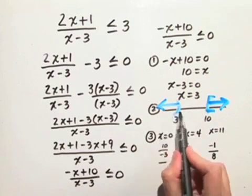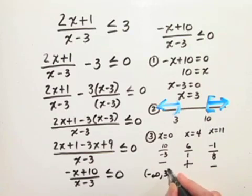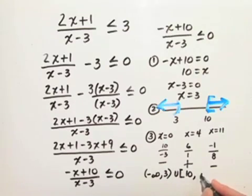How do I write this solution in interval notation? I write it as negative infinity up to, but not including 3, union 10 to positive infinity.